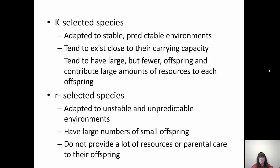We also have two types of species: K selected and R selected. K selected species are adapted to stable, predictable environments. They usually have populations close to their carrying capacity. They have large but fewer offspring and give large amounts of resources to those offspring to ensure their survival — humans are an example. R selected species are adapted to unstable and unpredictable environments. They have a large number of small offspring to get as many out there as possible, because not all will survive. They don't provide much parental care — they put them out there and the offspring are on their own.